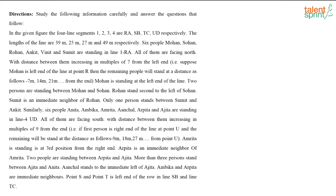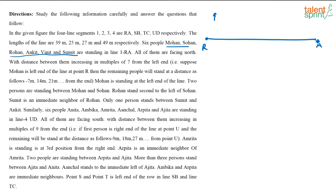There are four lines RA, SB, TC, and UD. First we consider line RA. Six people are standing in this line. The people are starting to stand from the left end — that is point R — and all are facing north. So this is the left end and this is the right end, and the people start from the left end. There is one person at R, then the second person, and the distance between each of them is 7 meters.